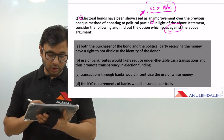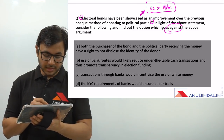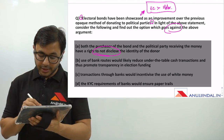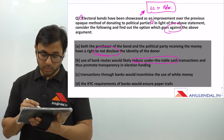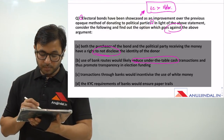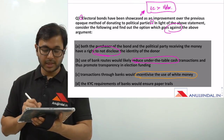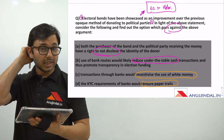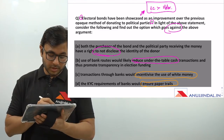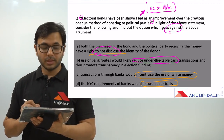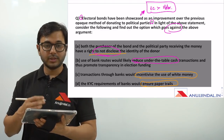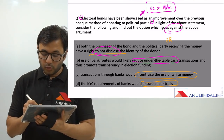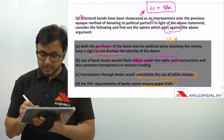Let's go through the options. Option A: Both the purchaser of the bond and the political party receiving the money have a right to not disclose the identity of the donor. This keyword — 'right to not disclose the identity of the donor' under the electoral bond scheme — clearly says that electoral bonds are in no way better than the older method.